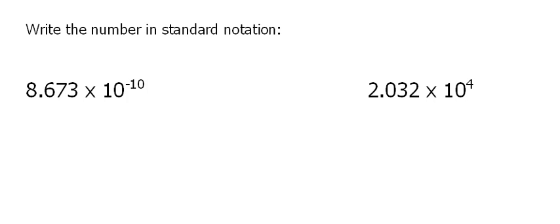We wrote numbers in standard notation last time, so now we're going to go the other way and write numbers in scientific notation — rather, we're going to go backwards and write numbers in standard notation. Here we're given a problem: 8.673 times 10 to the negative 10th, and that is right now in scientific notation.